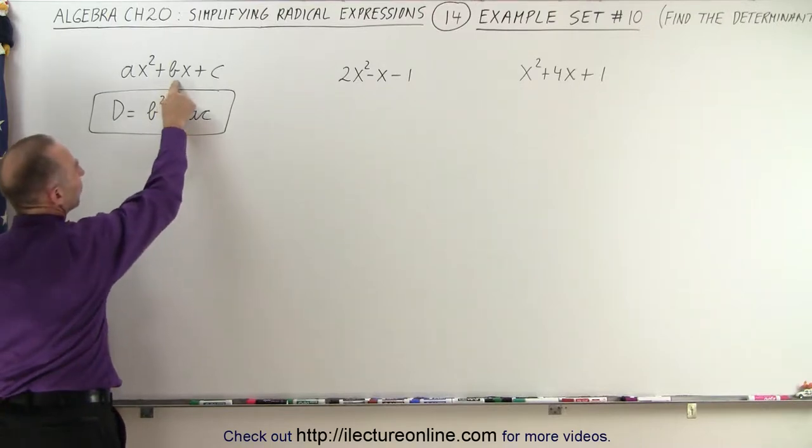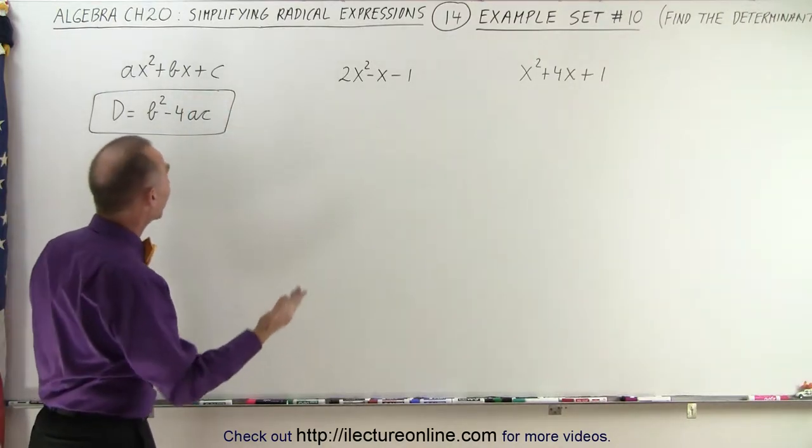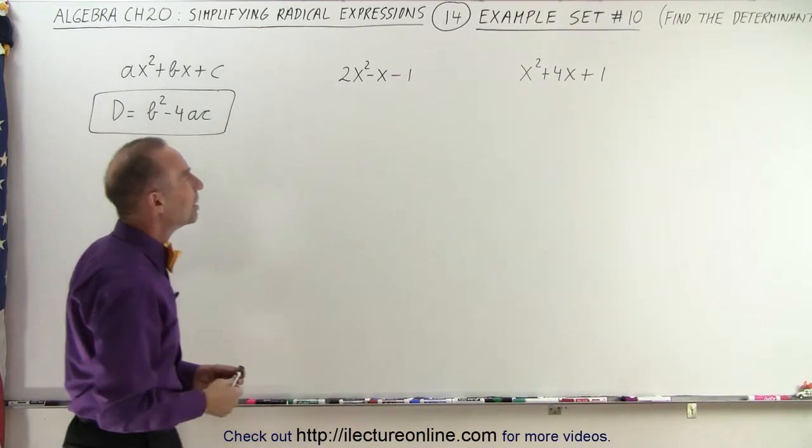b is the coefficient in front of the x term, a is the coefficient in front of the x squared term, and c is simply the constant. So let's identify the a, the b, and the c in each of these cases.